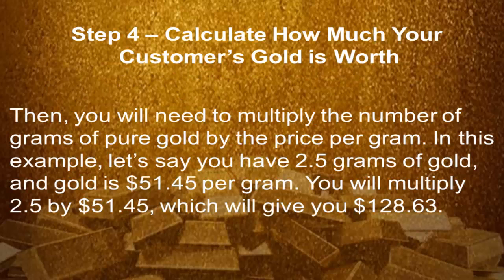Step 4: Calculate how much your customer's gold is worth. You will need to multiply the number of grams of pure gold by the price per gram. In this example, you have 2.5 grams of gold and gold is $51.45 per gram, so you will multiply 2.5 by $51.45, which gives you $128.63. See you on the next video.